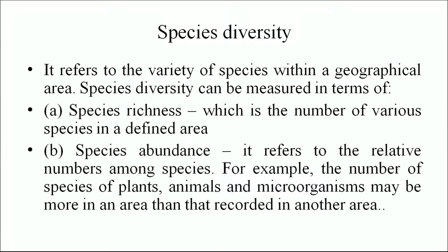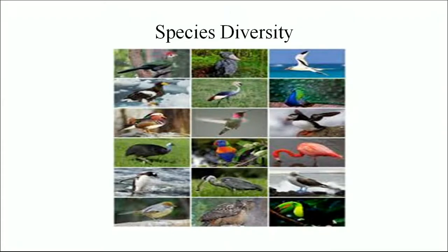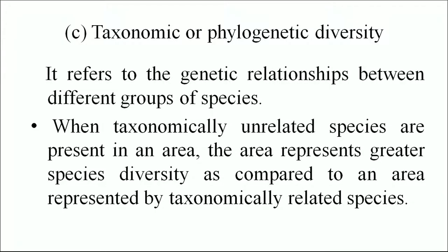Species diversity refers to the variety of species within a geographical area. It can be measured in terms of species richness — the number of various species in a defined area — and species abundance, which refers to the relative numbers among species. For example, the number of species of plants, animals and microorganisms may be more in one area than another. You can see in the diagram the diversity among bird species. Taxonomic or phylogenetic diversity refers to the genetic relationship between different groups of species. When taxonomically unrelated species are present in an area, that area represents greater species diversity compared to an area with taxonomically related species.